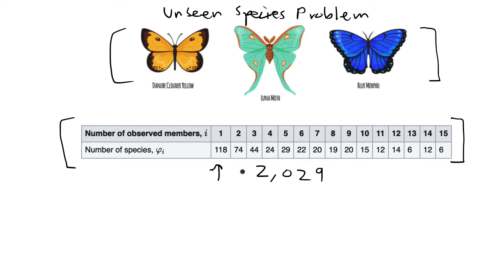The way this data is grouped in this table, there were 118 species of butterflies that were only sampled one time. Similarly, there were 75 species of butterflies that were sampled two times, and at the end there were six species of butterflies that were sampled 15 times. So if you do 118 times one plus 74 times two, etc., this would give you a total sample of 2,029.